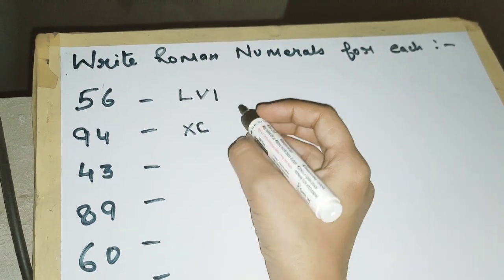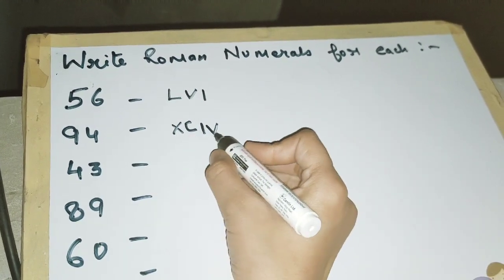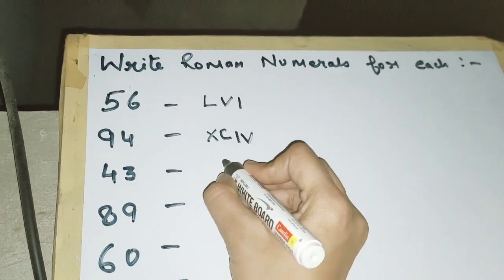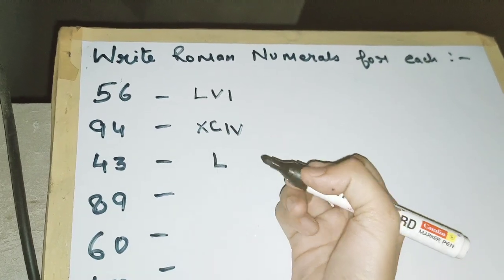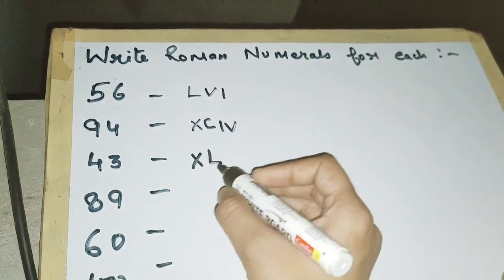Now for 43, we write L (that is 50), and then we write X before it, so XL is 40. Then for 3 we write I three times, so this is 43.